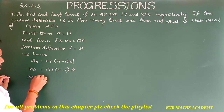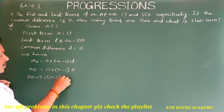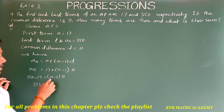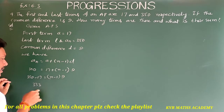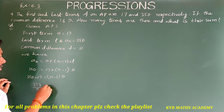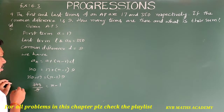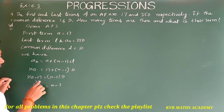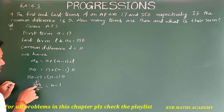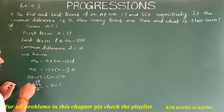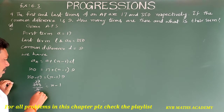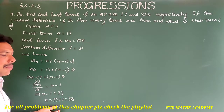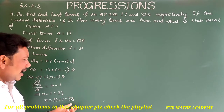Transfer 17 to the left side: 350 − 17 = (n−1)·9, which gives 333 = (n−1)·9. Dividing both sides by 9: 333 ÷ 9 = 37. So n − 1 = 37, therefore n = 38. The number of terms is 38.